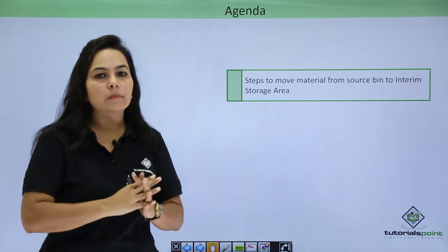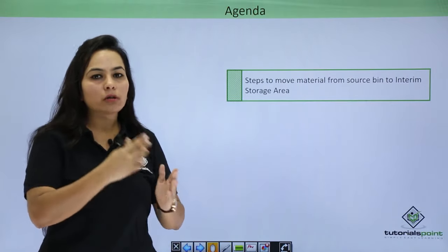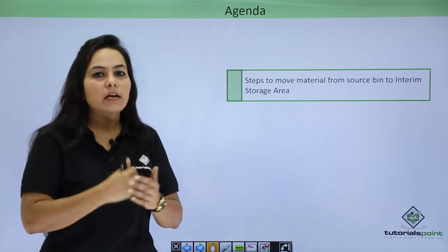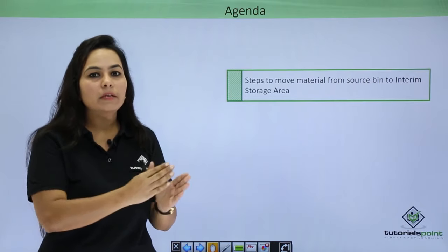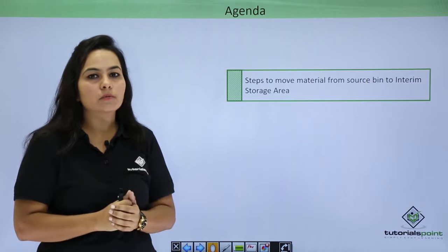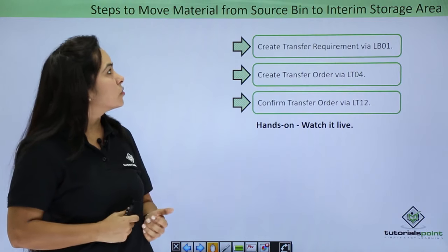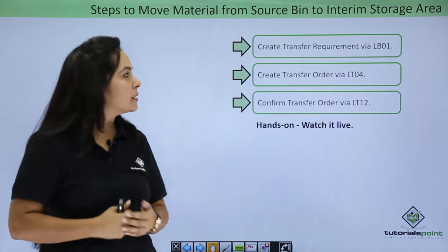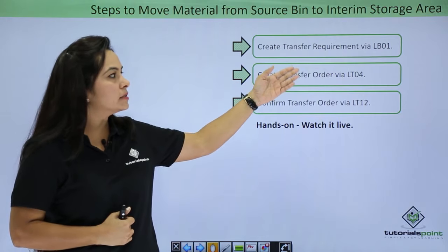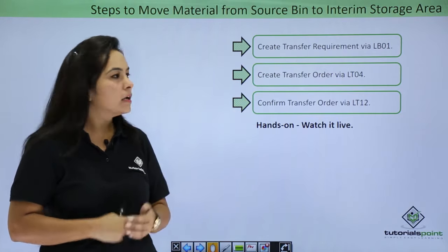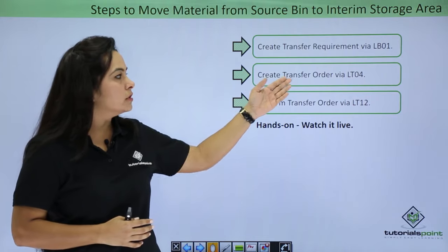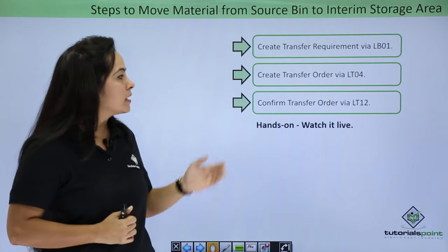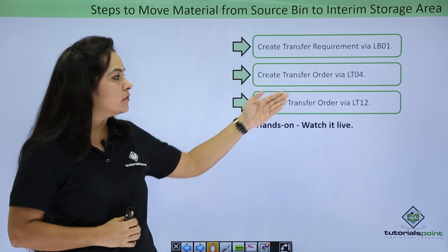There will sometimes be a need to move material within the warehouse. All movements that take place are via interim storage area. So when we have a need to move material from one bin to another bin, it will be via interim storage area. The first step is to create a transfer requirement via LB01, then we will create a transfer order via LT04 in reference to the transfer requirement, and then we will confirm the transfer order via LT12.